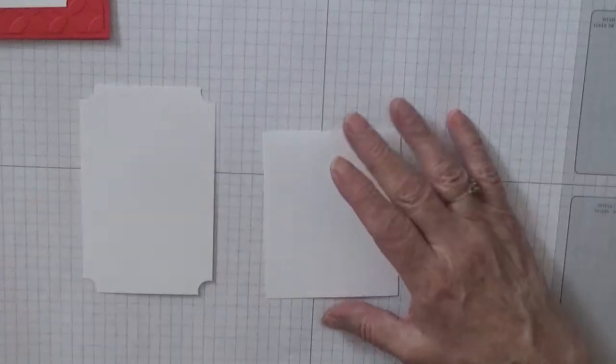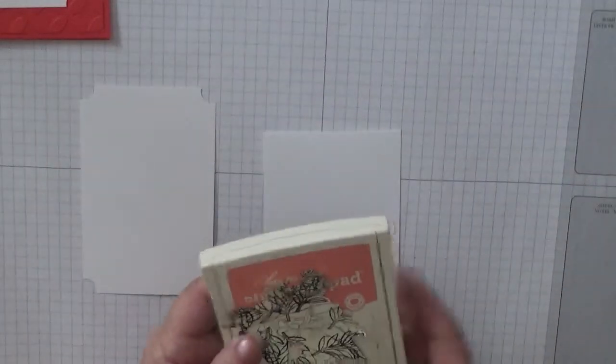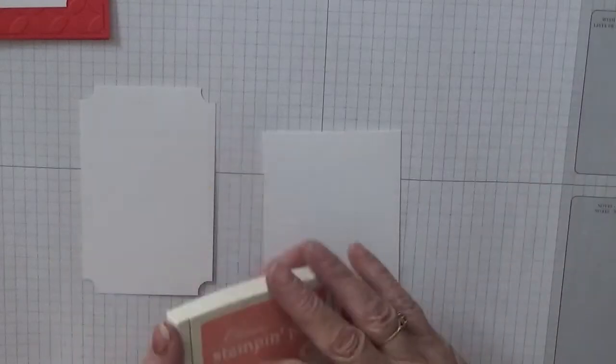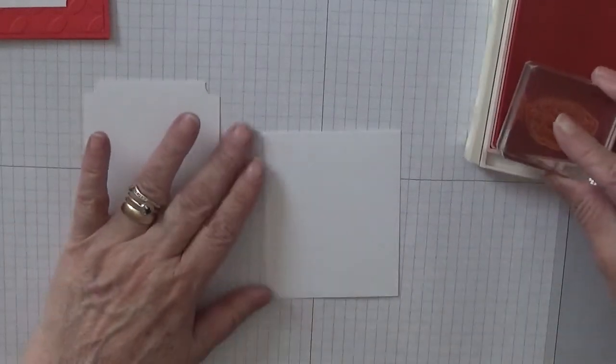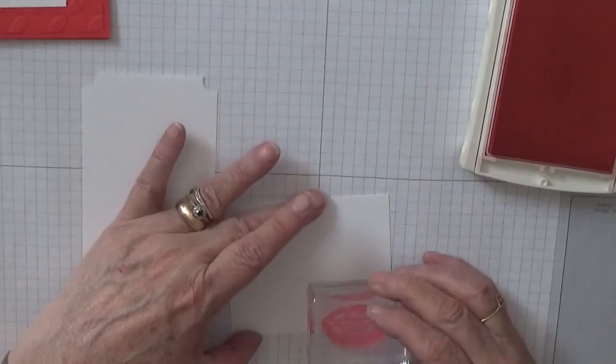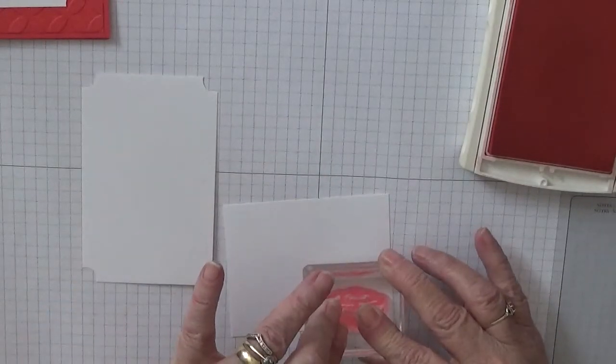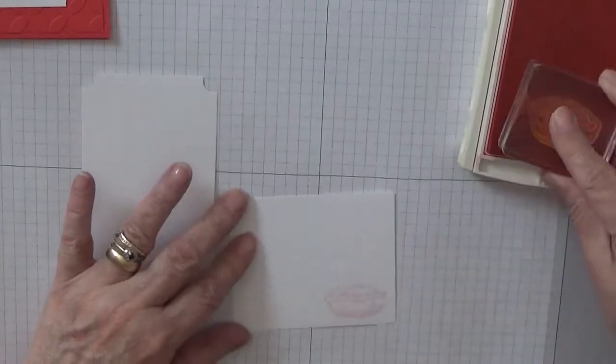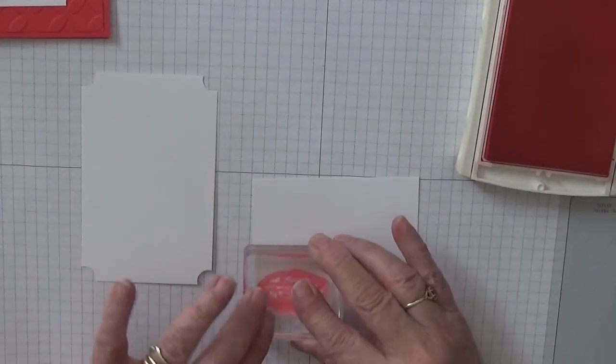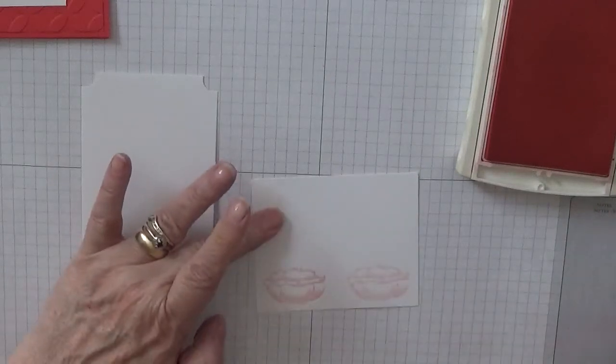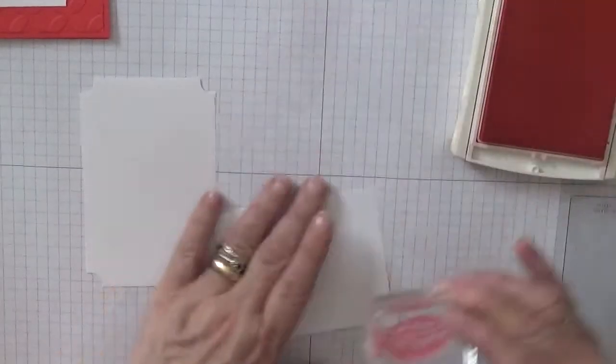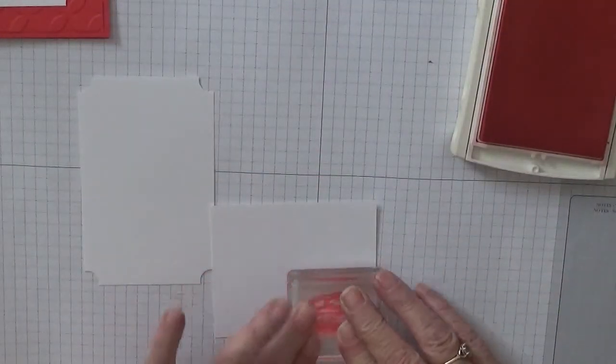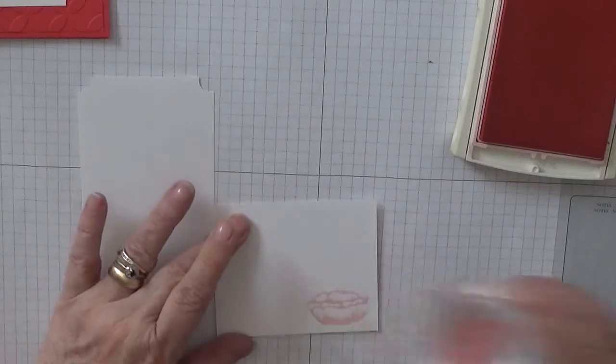So now we'll do our stamping. And with flirty flamingo ink, we will stamp our flowers. So do the outsides first. Let's see if I can get two on here. Very pale. So I'll do them again. I think my flirty flamingo might need re-inking. I've never re-inked it since I've had it. That's better.